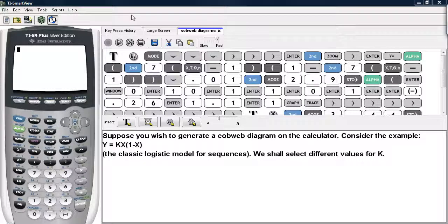Suppose you wish to generate a cobweb diagram on the calculator. Let's consider the example y equals k times x times the quantity 1 minus x. This is the classic logistic model for sequences. We shall select different values for k to demonstrate how to generate cobweb diagrams.